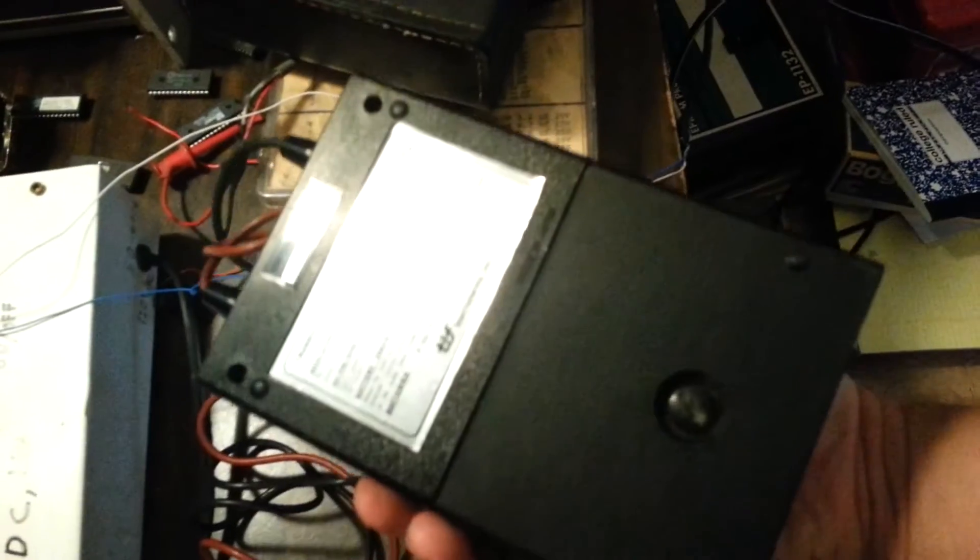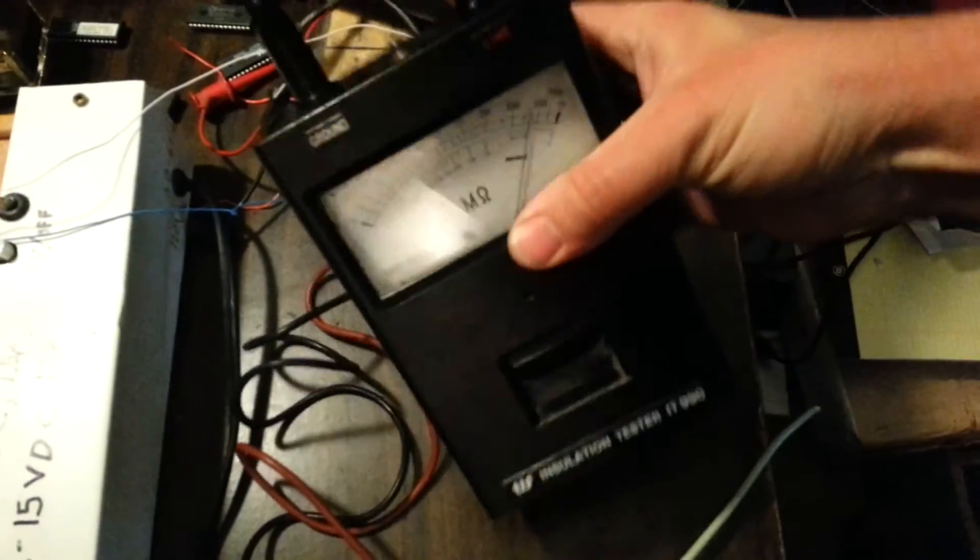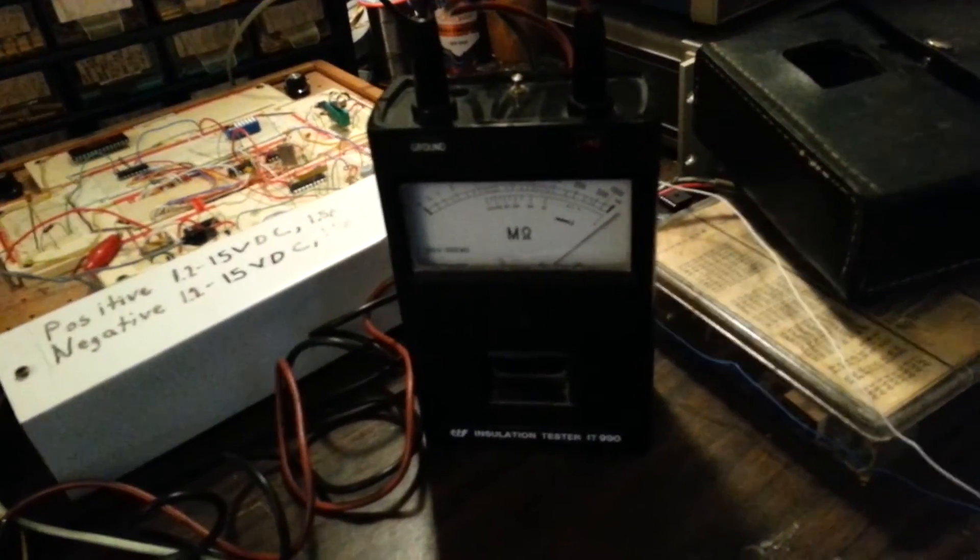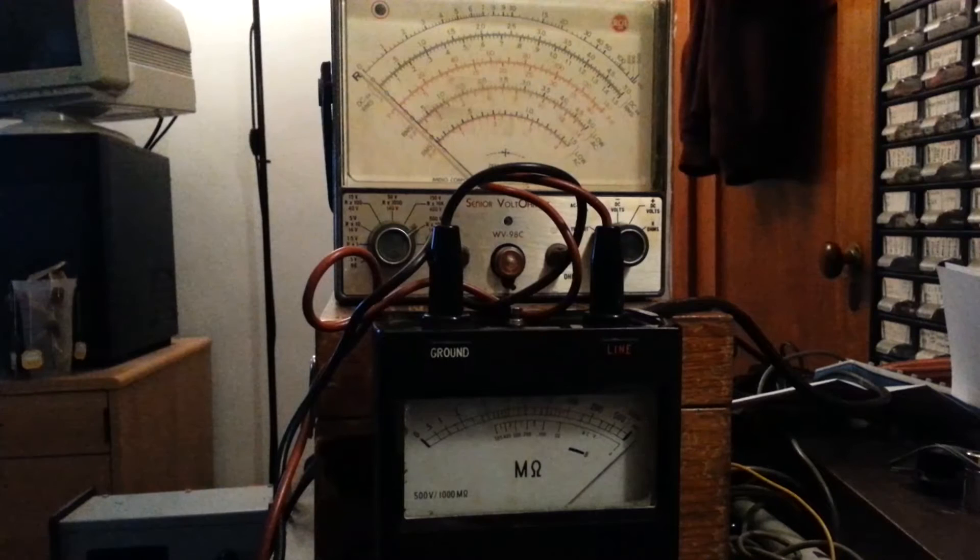This meter also has a case for it. And anyway, it's a pretty interesting device made in Japan. I hope you enjoyed this video showing the TIF insulation tester model IT 990, also known as a mega ohm resistance meter for up to a gigaohm range. Okay.